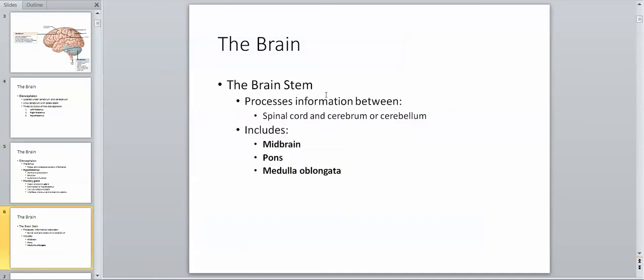The brainstem has three sections: the midbrain, the pons, and the medulla oblongata. The midbrain has several functions. The pons is important in somatic and visceral motor control. The medulla oblongata regulates your breathing rhythmicity, heart rate, force of cardiac contraction, and vasomotor tone — that is dilation and contraction of your blood vessels. There is also interaction between the medulla and the pons, where breathing centers in the pons work with breathing centers in the medulla oblongata to modify patterns of breathing.